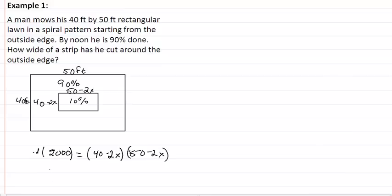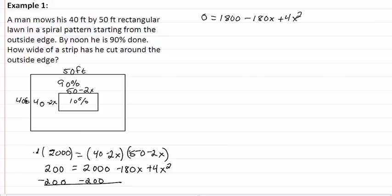Let's expand this out. We're going to get 200 equal to 2000 minus 180x plus 4x squared. This is all divisible by 4 so let's do that and see if we get something that we can factor. Put it in order. So we have 0 equal to x squared minus 45x plus 450. This will easily factor as x minus 30 and x minus 15.